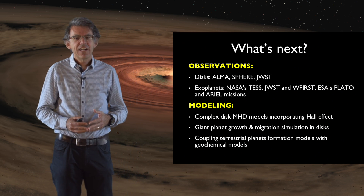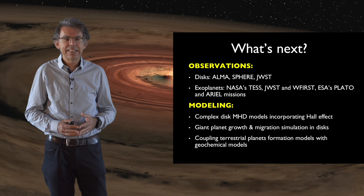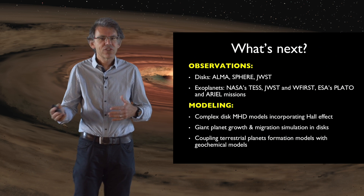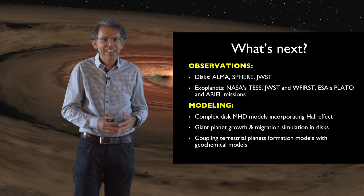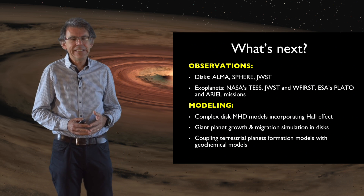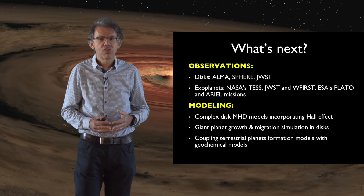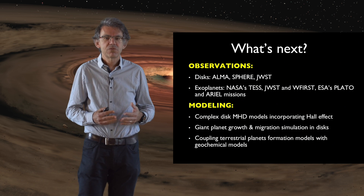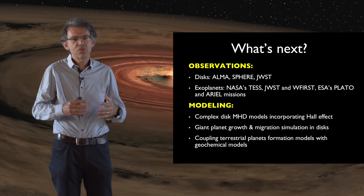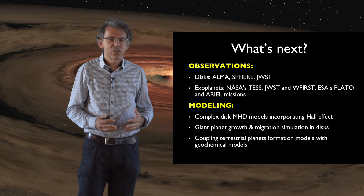For extrasolar planets, a number of new missions will be launched — in particular TESS by NASA and PLATO by ESA — that will allow discovery of small planets, super-Earths, and terrestrial-like worlds further from their stars, more closely resembling terrestrial planets in our solar system. The JWST and the ESA Ariel mission will allow characterization of these planets — understanding their composition and atmospheric composition. WFIRST, another space mission, will discover a new category of planets by a technique called microlensing, finding planets further from their stars and thus more typical of planets in our solar system.